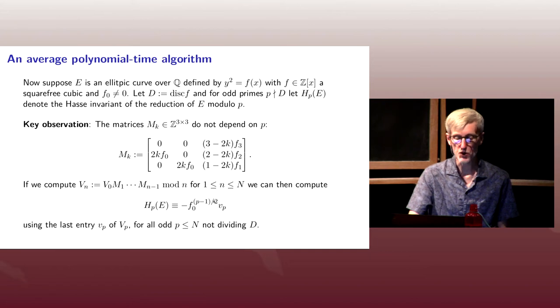And multiply it by minus the constant coefficient raised to the P minus 1 over 2. But notice now this is going to be a different P at each step. So we're running through all the odd primes that don't divide D up to N.